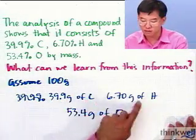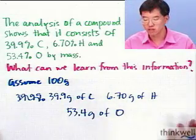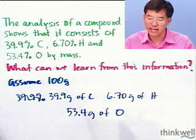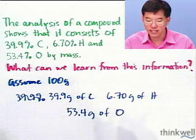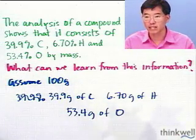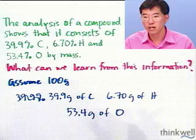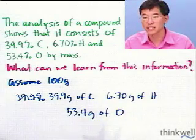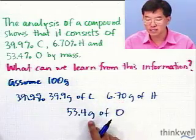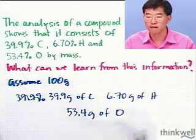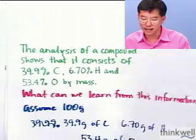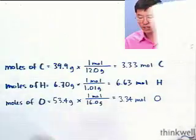These values in grams are okay, but not really useful. Remember, if we're trying to understand the composition of a molecule — how many atoms of each kind — what we need is moles. The way to convert to moles is to take the masses and divide by the molar mass, or multiply by one over the molar mass.